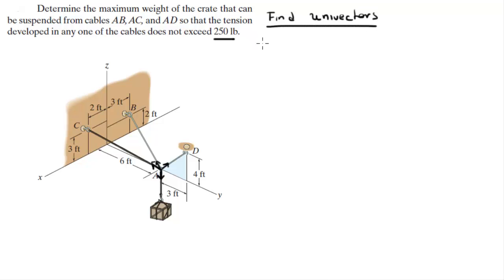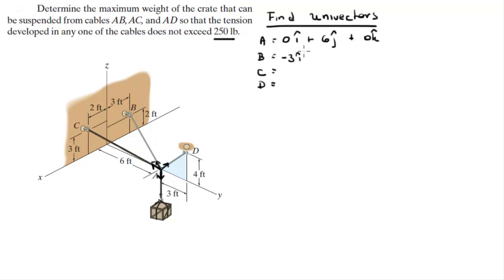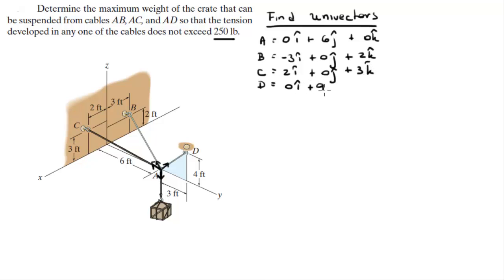To find all the unit vectors, we're going to find all the points involved: A, B, C, and D. Point A sits at (0i + 6j + 0k). B sits at (-3i + 0j + 2k). C sits at (2i + 0j + 3k). And D sits at (0i + 9j + 4k).